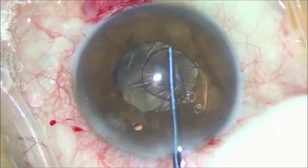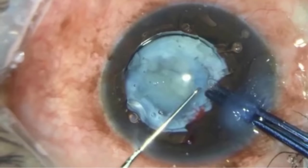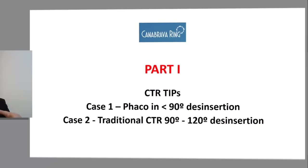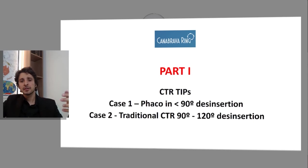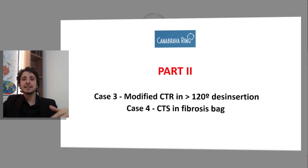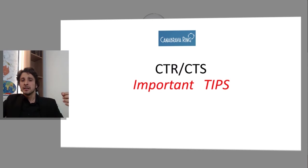In these two classes, I will talk about Capsular Tension Segments, Capsular Hooks, and Capsular Tension Rings. Today, part one: CTR tips. Case one — FACO in lower than 9 degrees disinsertion. Case two — traditional CTR between 9 and 120 degrees disinsertion. In the next class, I will show case three: modified CTR in bigger than 120 degrees disinsertion. And case four: the Capsular Tension Segment and Fibrous Bag. Let's start.